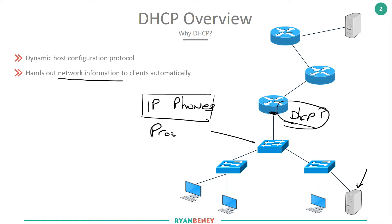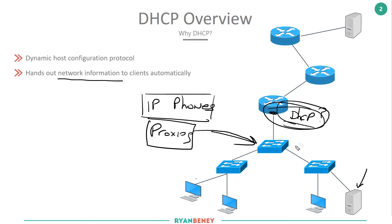We also have things like proxies. If a PC connects to the network and we want to make sure it can only visit certain websites, we may lock it down with a proxy — and DHCP can tell that PC where to get its proxy information. There are many extra features that DHCP uses, and these features are called options.